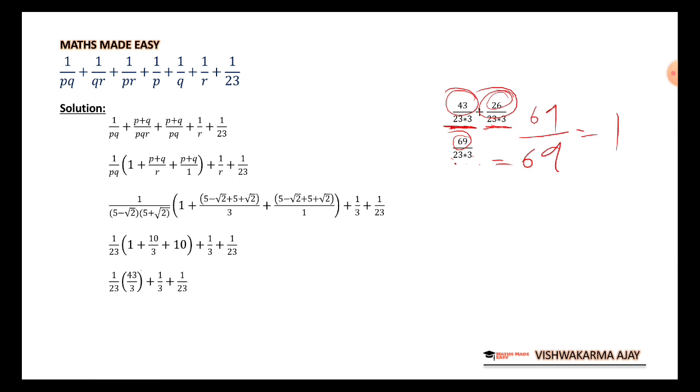Or you can go like this. 3, 23, so 23 upon 23. Now 23 cancel, 23. So we have only 1.